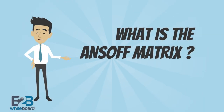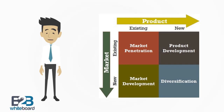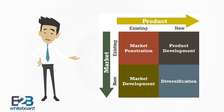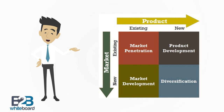The ANTSOFT matrix is a category management tool which relates market position to market strategy. It maps new versus existing products along one axis, and new versus existing markets along the other. Each quadrant of the matrix relates to a product market strategy.